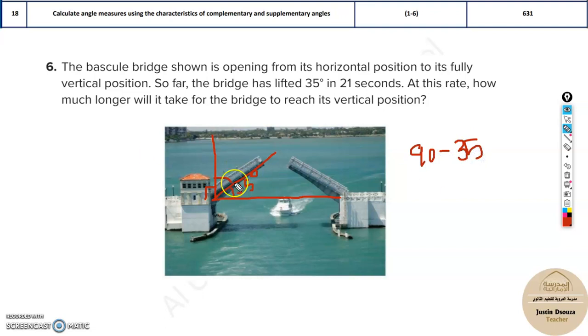So I've just repeated, the bridge will open up until vertical position, that is 90 degrees. But as of now it is already done by 35 degrees. So we have been told for 35 degrees it took 21 seconds. How much more time to go vertical position? Before we find the time, we need to find the angle that is remaining to move up. So 35 degrees is done from 90, so you will have 55 degrees more to go. So the angle will be 55 more degrees.